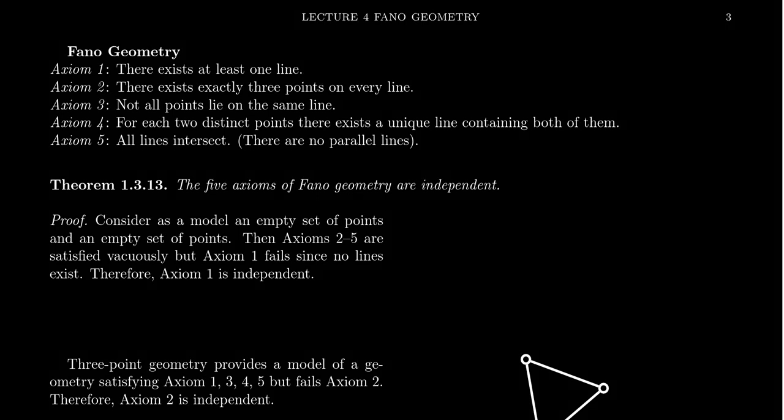In the previous lecture, we introduced the five axioms of Fano geometry, which were listed as axioms one through five. We proved that Fano geometry is consistent. We also proved that Fano geometry as an axiomatic system is complete — that there's only one model up to isomorphism.